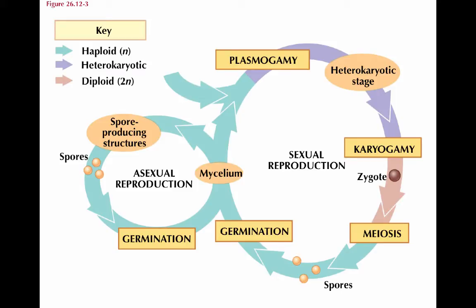The reproductive cycle of fungi has two possibilities. Most fungi can undergo either asexual or sexual reproduction. In asexual reproduction, the starting mycelium and the new mycelium are genetically identical clones. The entire cycle is haploid — going from haploid mycelium to a haploid spore-producing structure to haploid spores and back to a haploid mycelium — so all transitions are mitotic events, going from N to N to N.